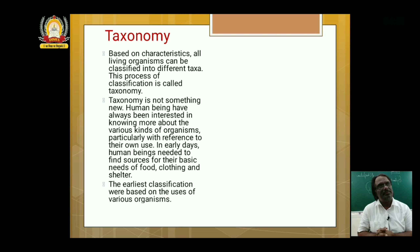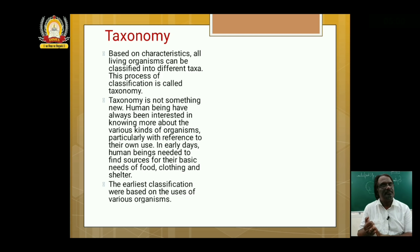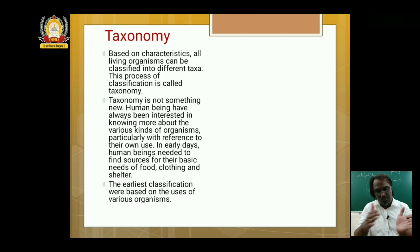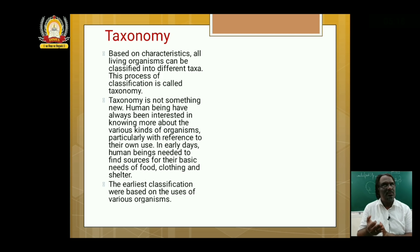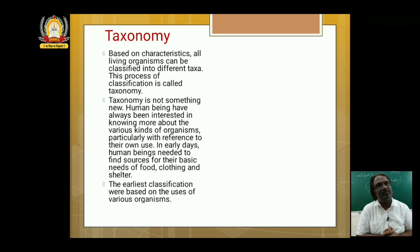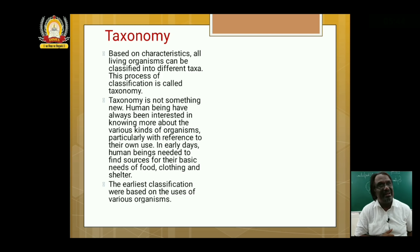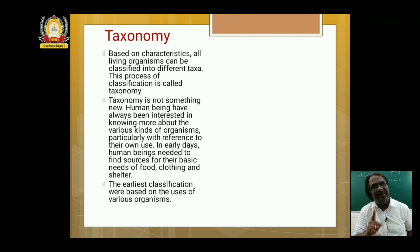For example, a hen and cattle were considered useful organisms, so he put them in the same category — even though a hen is a bird and cattle is a mammal. Whereas snake, frog, and peacock were considered of no use, so he put them together. But a frog is an amphibian, a snake is a reptile, and a peacock is a bird — they are different. So that earlier classification is now considered non-scientific, though it was an attempt made by early human beings.